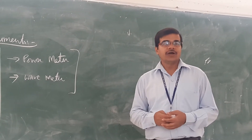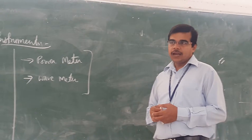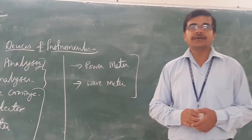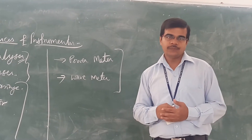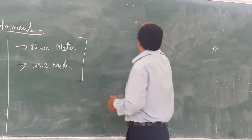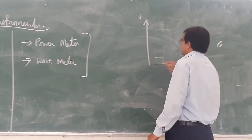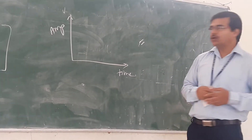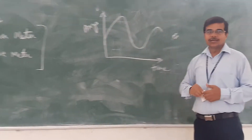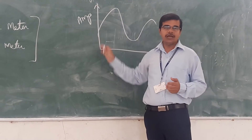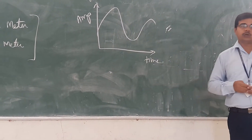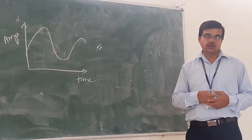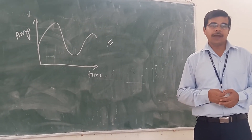You can find all these in research laboratories like DRDO. Now, let us see what a spectrum analyzer is. Compare it with your CRO. In CRO, we have an amplitude-time graph — you have time on the X-axis and amplitude on the Y-axis. Because of this amplitude-time graph, CRO is called a time domain instrument.